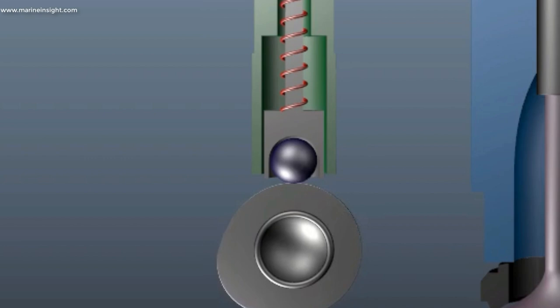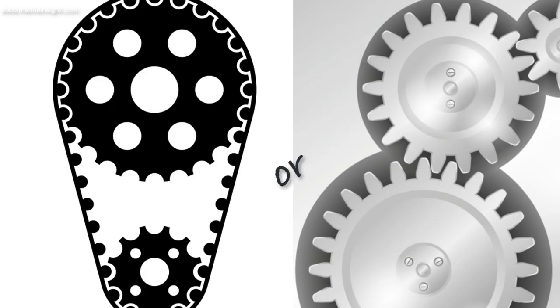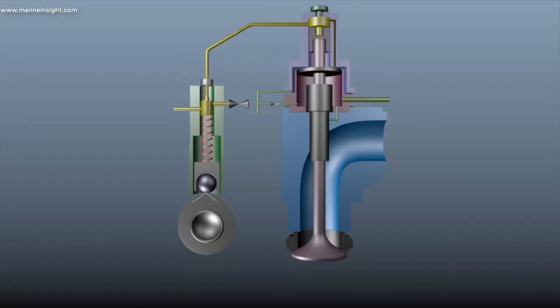The camshaft of the exhaust valve is connected to the crankshaft via chains or gears. Once the cam is in the cam profile, the hydraulic pump will overcome the spring force and the oil will be delivered to the exhaust valve at high pressure.